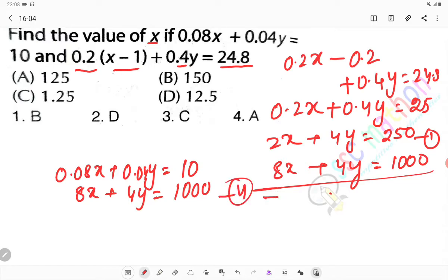Using the elimination method, subtracting one equation from the other. After calculation, we get 6x equals 750, so x equals 125.